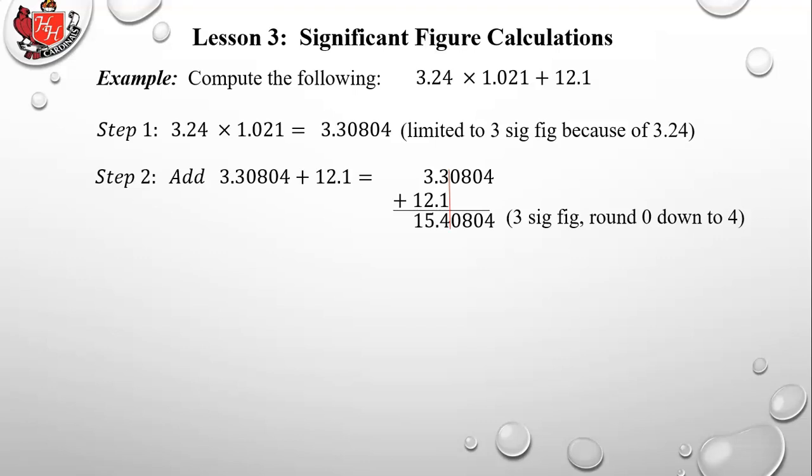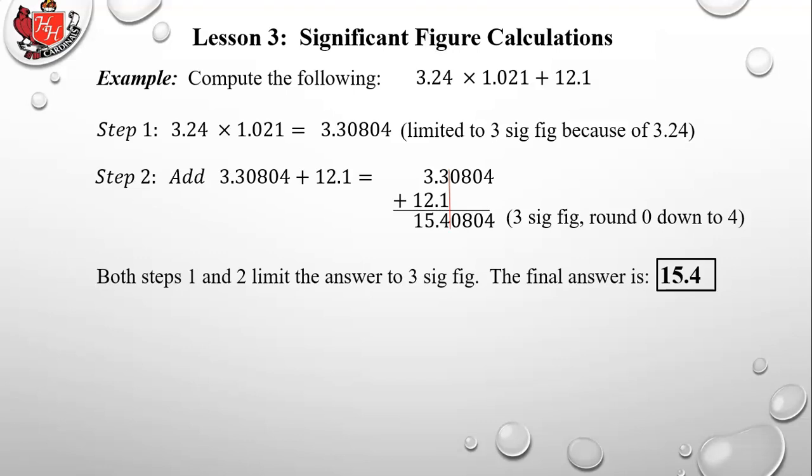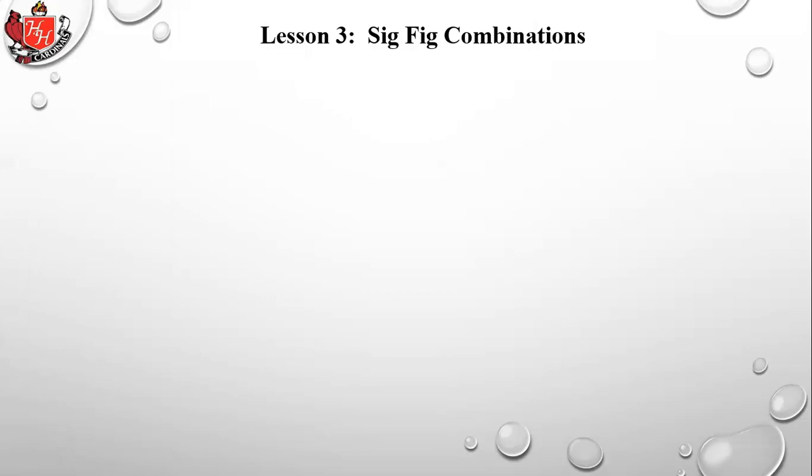Now add 3.30804 to 12.1. Using the addition rule, draw a line next to the 0.1 in 12.1, running through the answer. The result is 15.40804, and rounding at the line gives 15.4. The 0 after the 4 rounds it back down, so the final answer is 15.4.